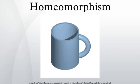Thus, a square and a circle are homeomorphic to each other, but a sphere and a torus are not.